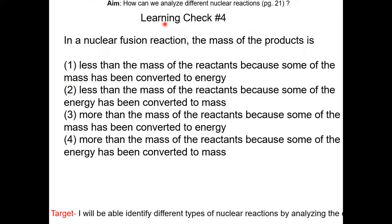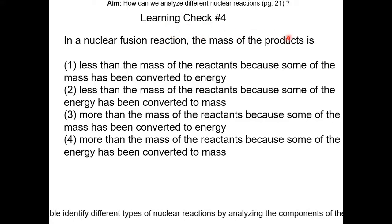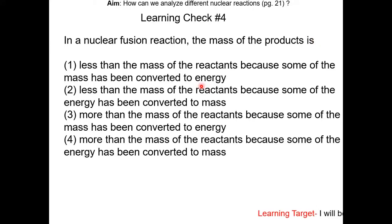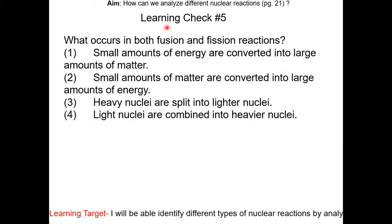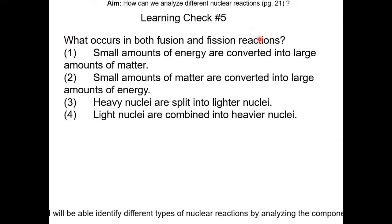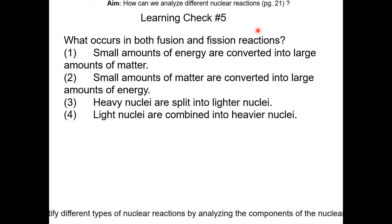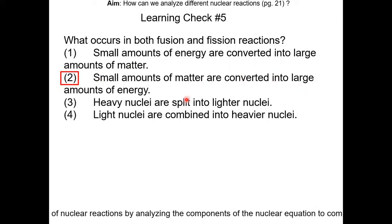Learning check number 4: in a nuclear fusion reaction, the mass of the products is what? The answer is choice 1 — the mass of the products is less than the mass of the reactants, because some of the mass is converted to energy. Learning check number 5: what occurs in both fusion and fission reactions? The answer is choice 2 — small amounts of matter are converted to large amounts of energy.